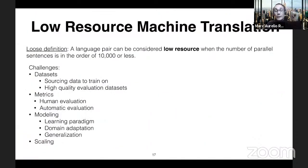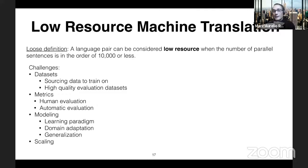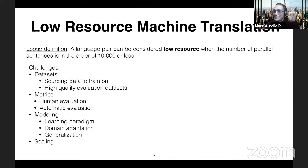For me, low-resource machine translation is the problem of building a machine translation system on a language pair that has roughly fewer than 10,000 parallel sentences. This is little compared to the number of parameters that modern neural machine translation systems have — we are talking about 100 million parameters or more. There was a new article from Google Brain proposing a one-trillion-parameter model. And by textbook definition, you need at least three data points to estimate each single parameter — so here we are way less than that.